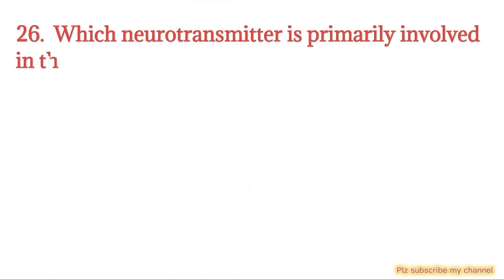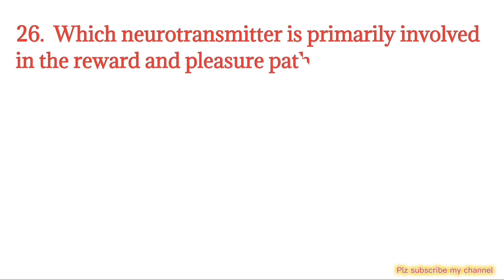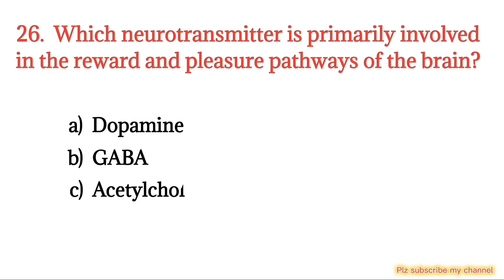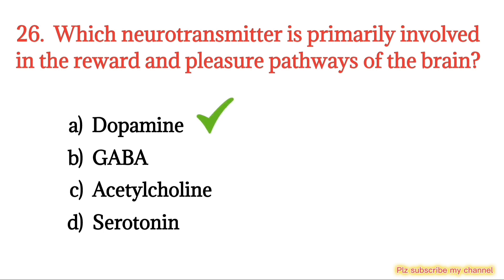MCQ number 26. Which neurotransmitter is primarily involved in the reward and pleasure pathway of the brain? Option A: Dopamine. Option B: GABA. Option C: Acetylcholine. Option D: Serotonin. The right option is Option A.